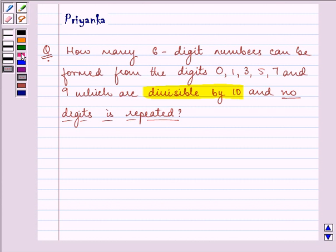Now, let us start with our solution. The given numbers are 0, 1, 3, 5, 7 and 9.